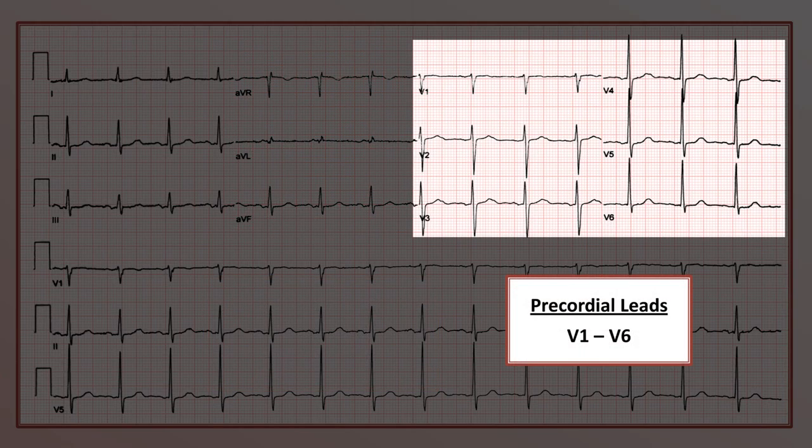Then there are the six precordial leads, labeled V1 through V6.